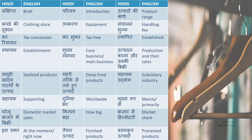In that case you will say duniya bhar, which is worldwide. The next word is mukhya rup se — mainly or primarily. Gharelu bazaar mein bikri means domestic market sales. Domestic is gharelu. Market means bazaar, sales means bikri. Bazaar mein hisse dari means market share. Aapke company ki bazaar mein hisse dari kitni hai — toh market share kitni hai.